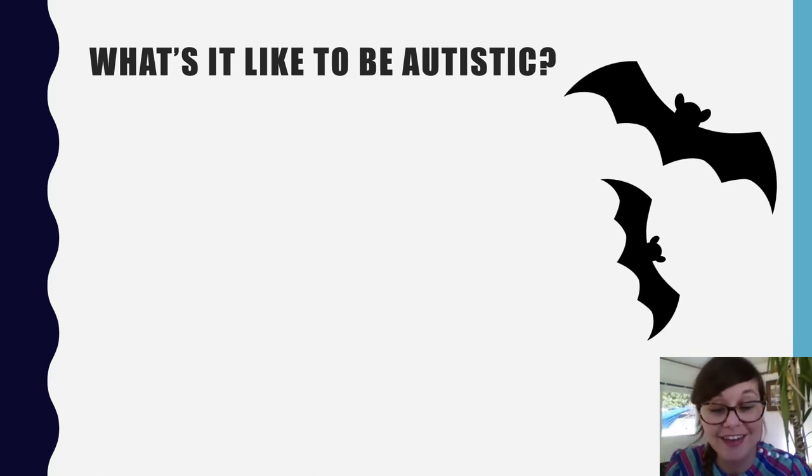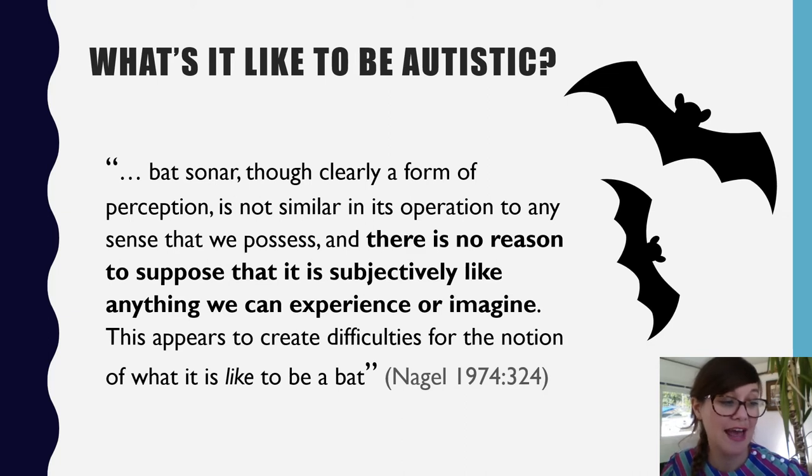So Nagel famously asked 'What's it like to be a bat?' and concluded that it is unknowable on account of the chasm of perceptual differences informing the human and bat subjectivity. And he decided that bat sonar, though clearly a form of perception, is not similar in its operation to any sense that we possess, and there is no reason to suppose that it is subjectively like anything we can experience or imagine. This appears to create difficulties for the notion of what is it like to be a bat.